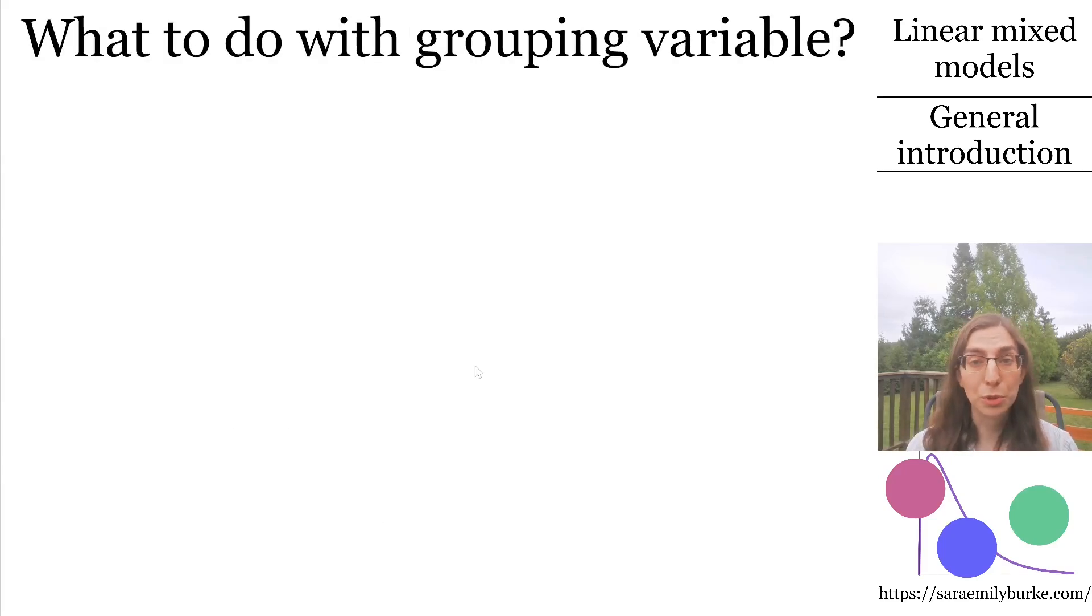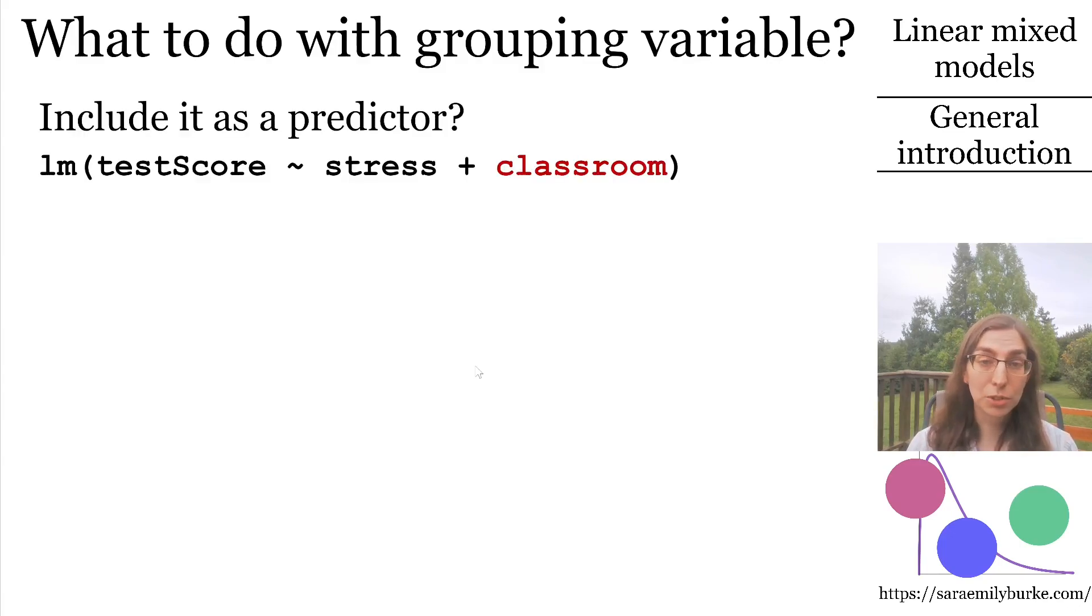So what could you do with a grouping variable like this? Let's suppose you have a dataset where each observation is one row, and the grouping variable is one of the columns. You could simply try to include the grouping variable in your model as a predictor. In the example where students were nested within classrooms, you could add a factor representing classroom as a predictor, shown here in red.